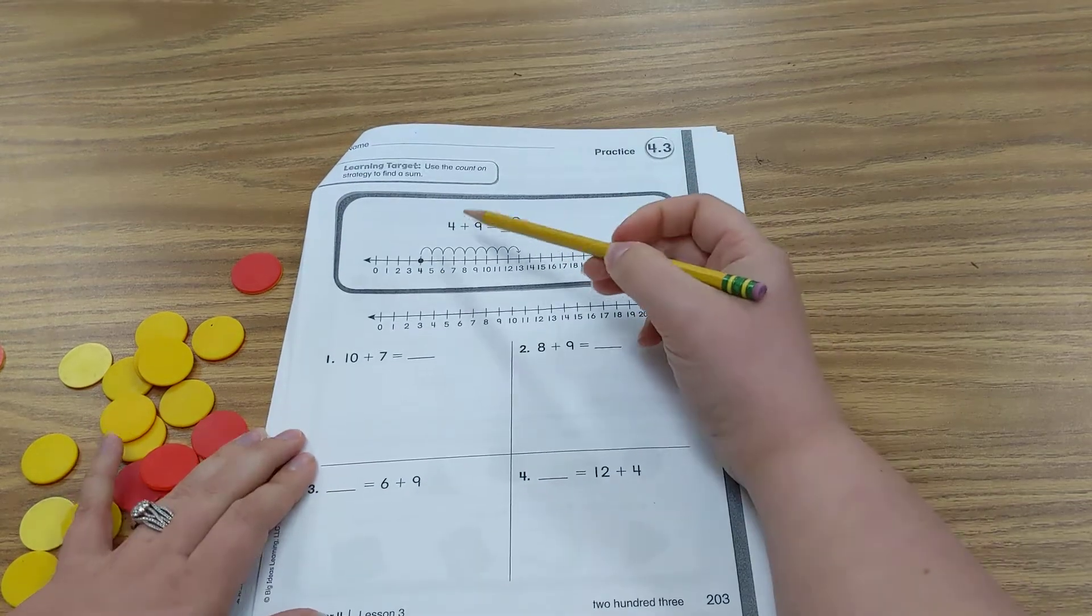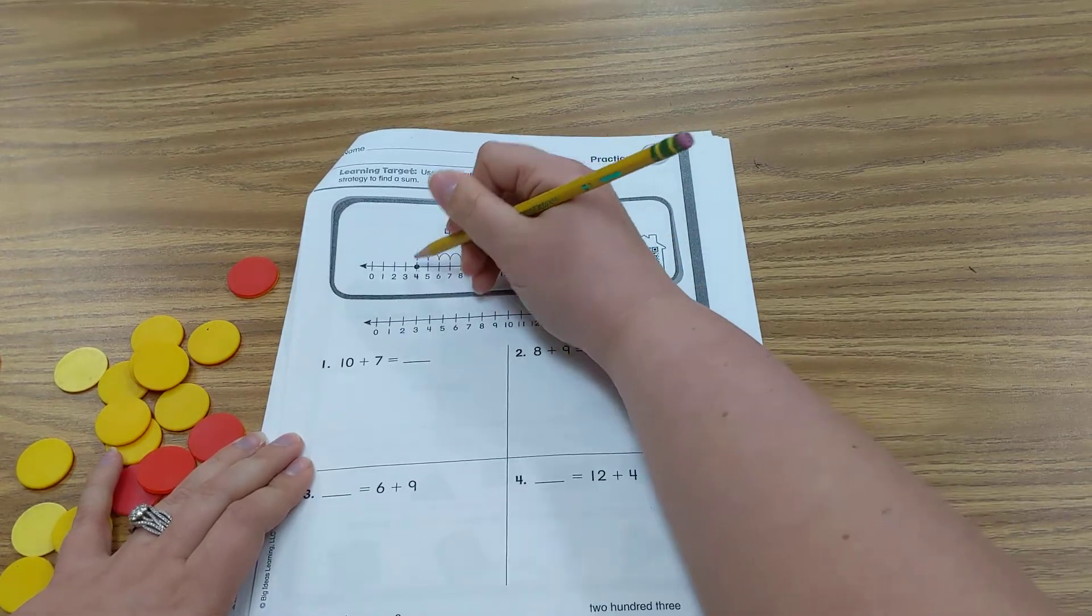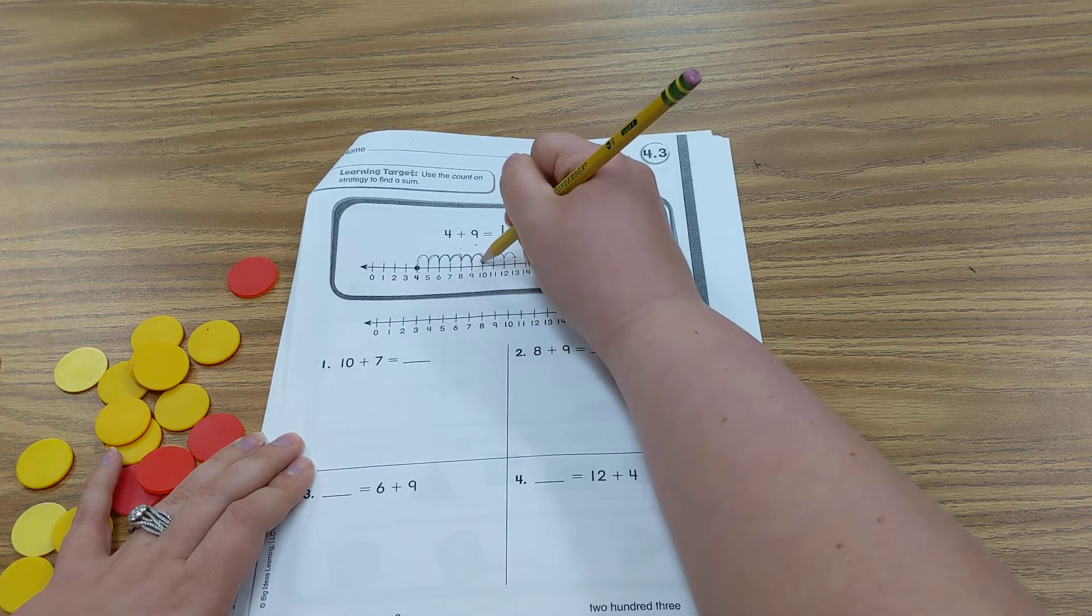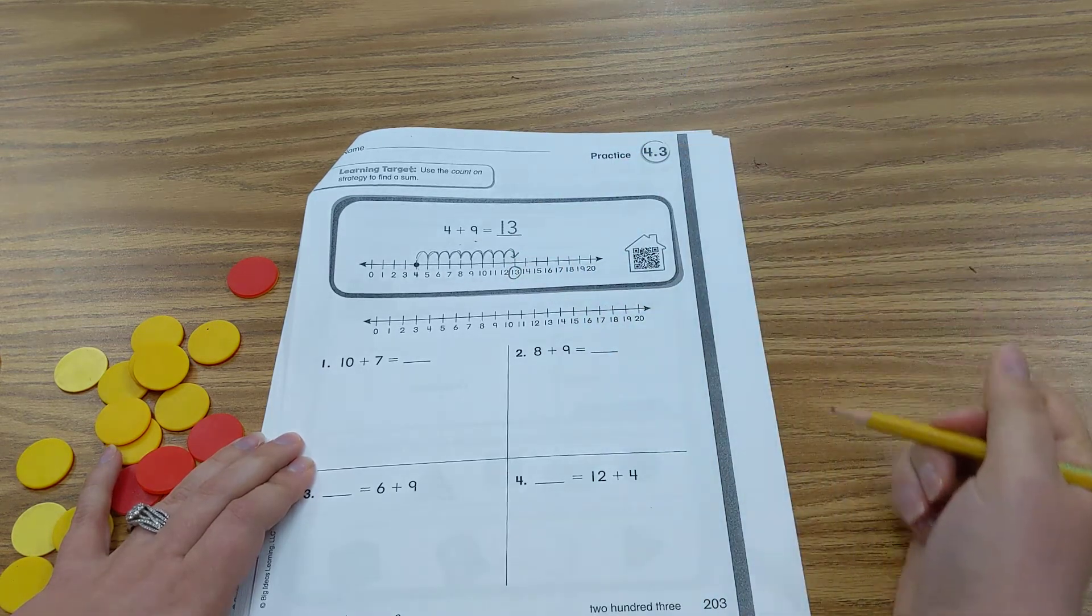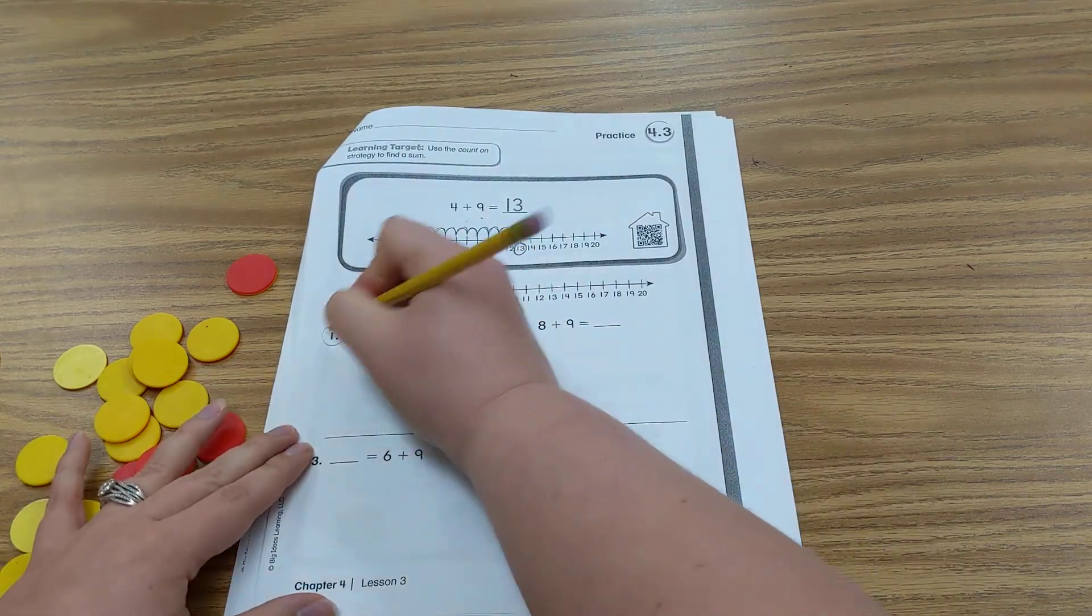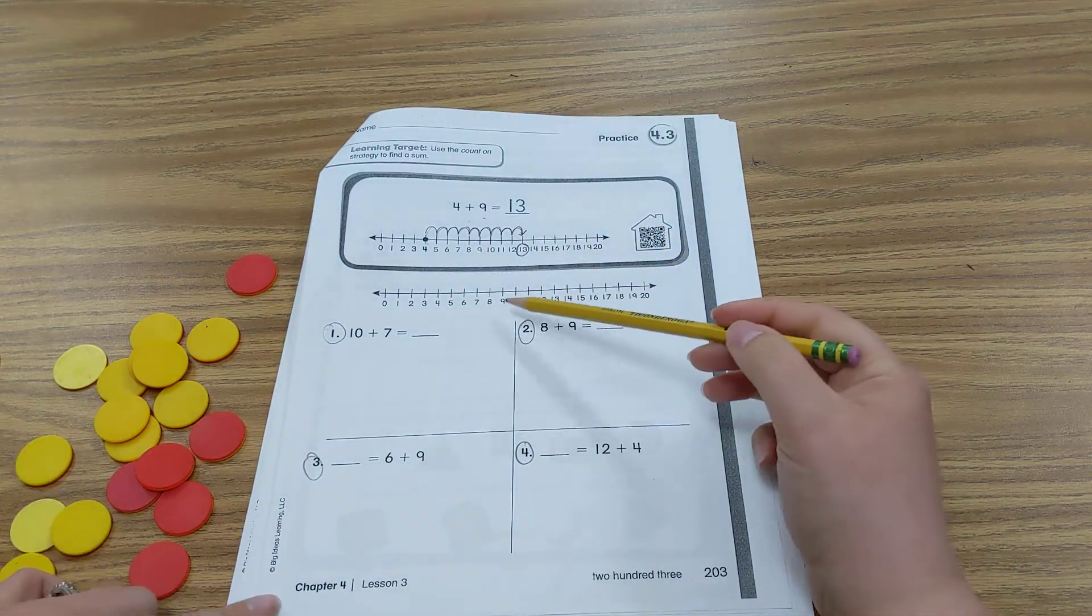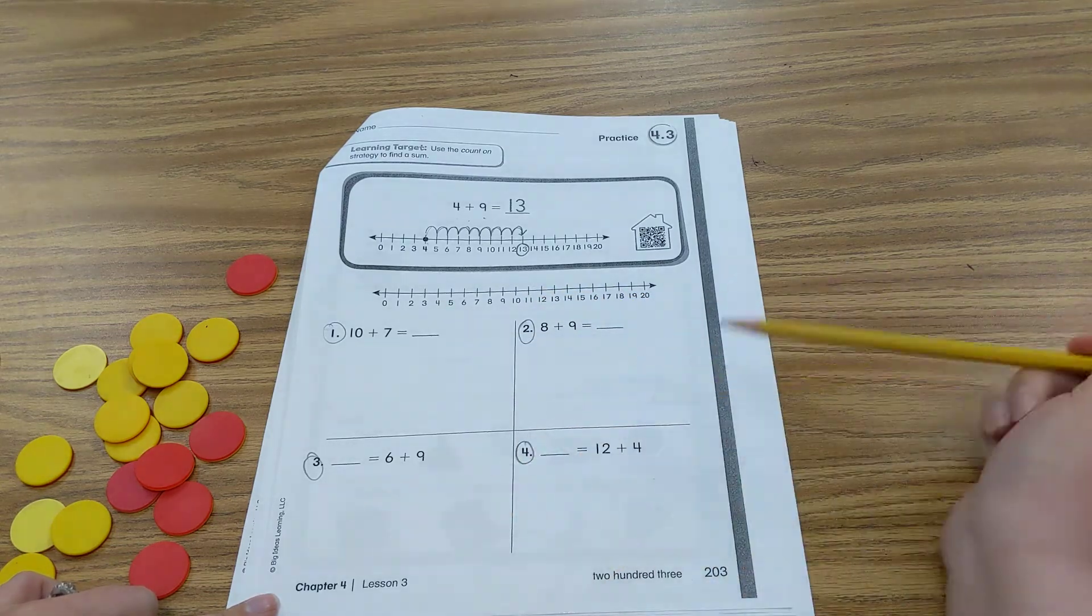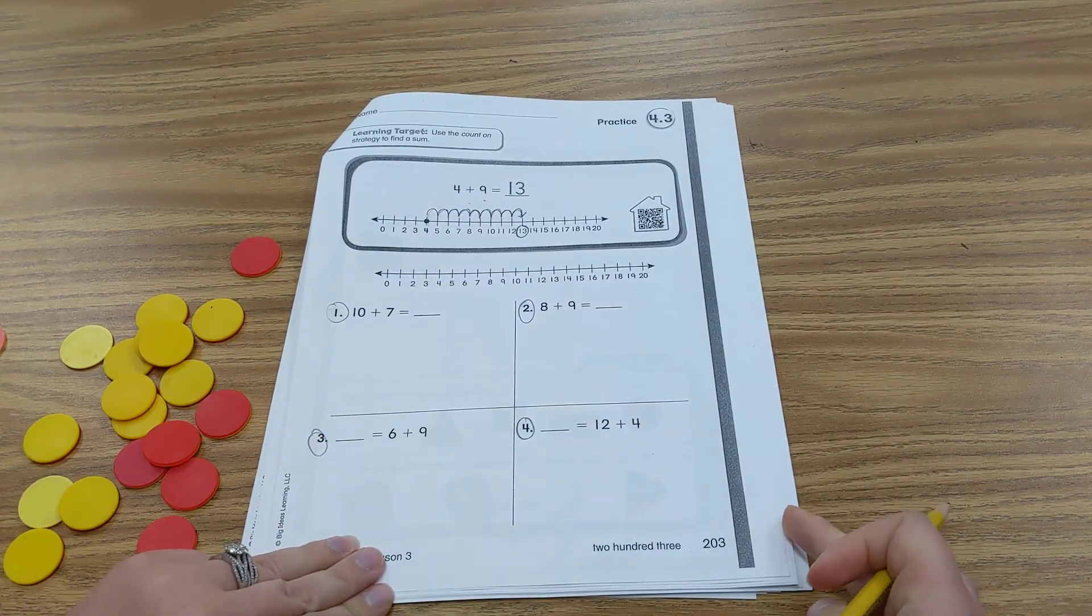Practice! So our model is 4 plus 9. So we started at 4 and we go up 9. 1, 2, 3, 4, 5, 6, 7, 8, 9. 4 and 9 more is 13. You're going to do the same for 1, 2, 3, and number 4. All you need to do is write lightly on your number line and erase as needed. Or you can draw more number lines. So push pause and then push play when you're ready to continue on.